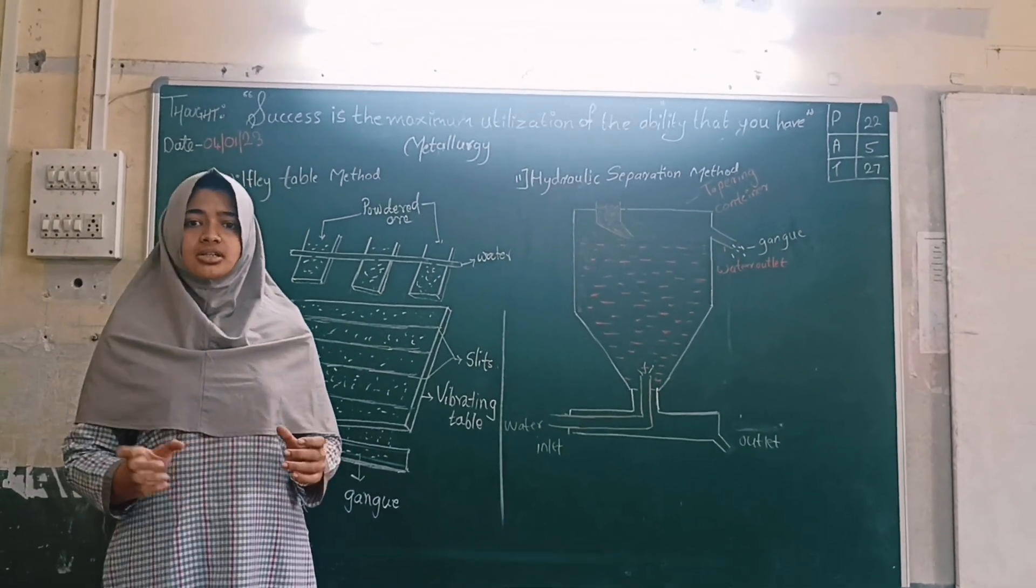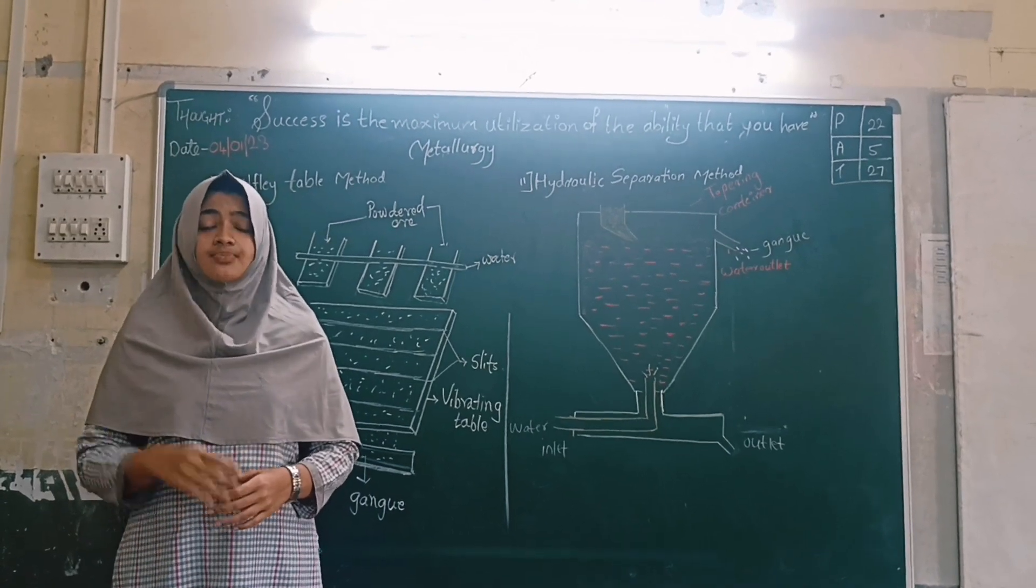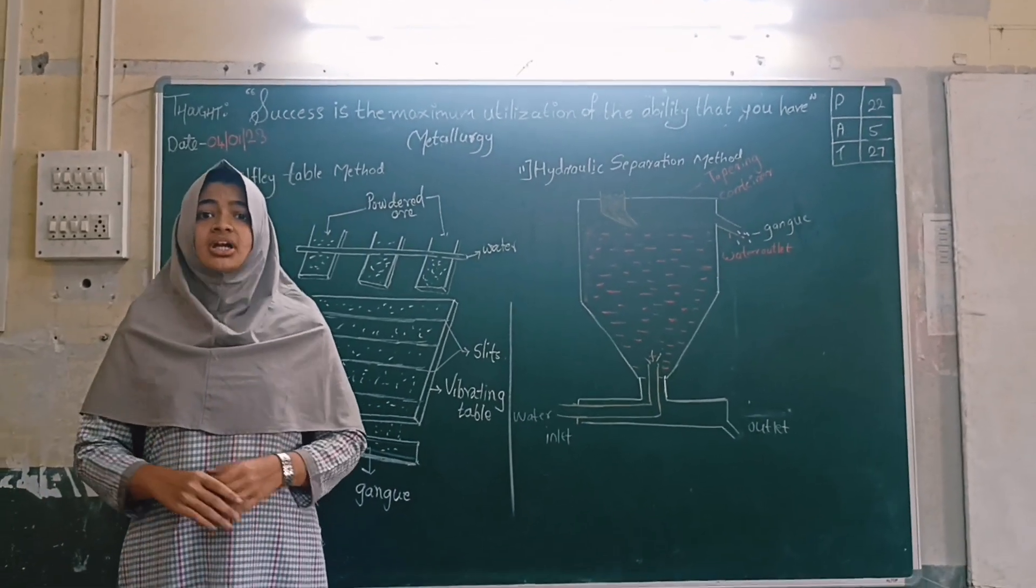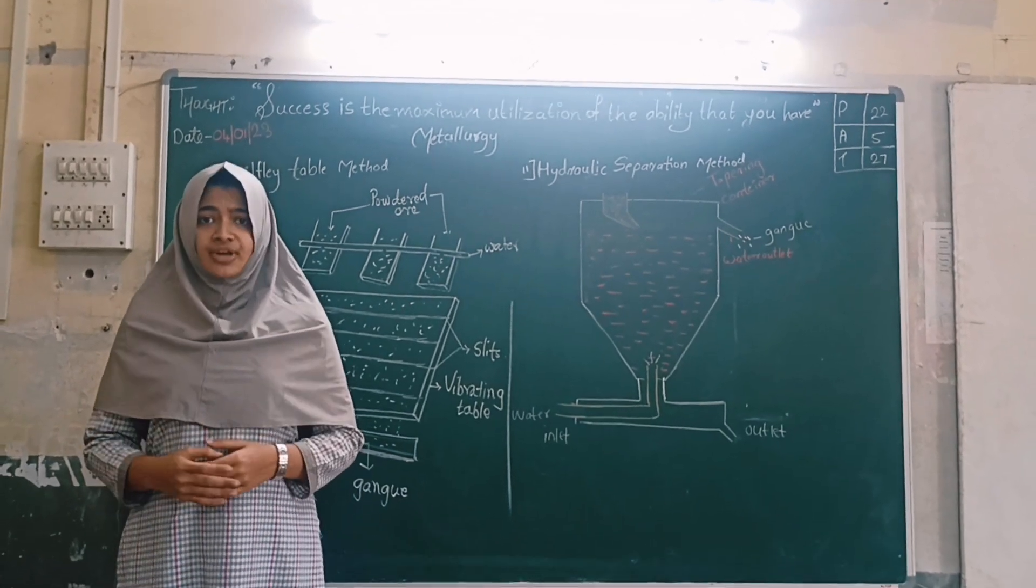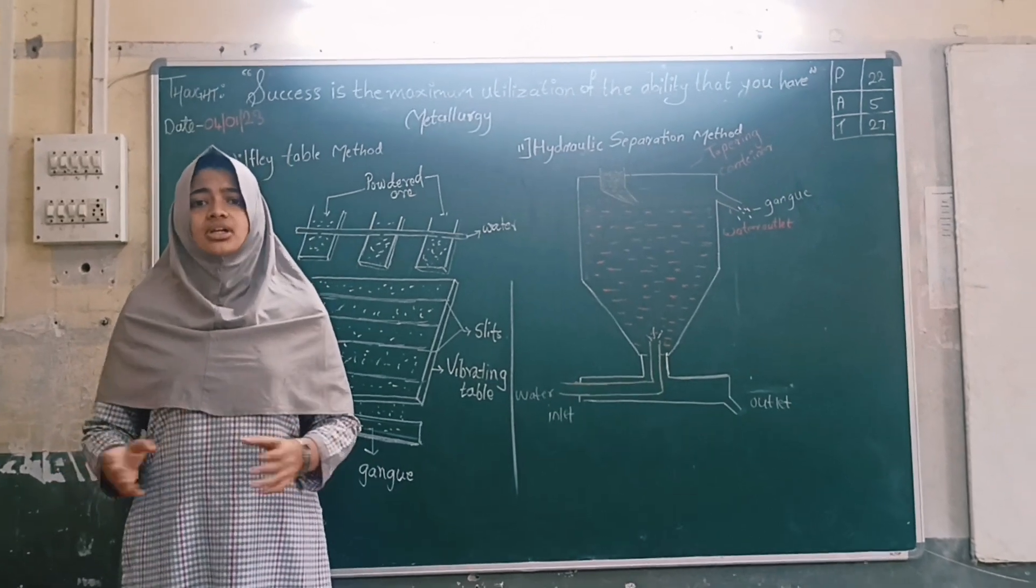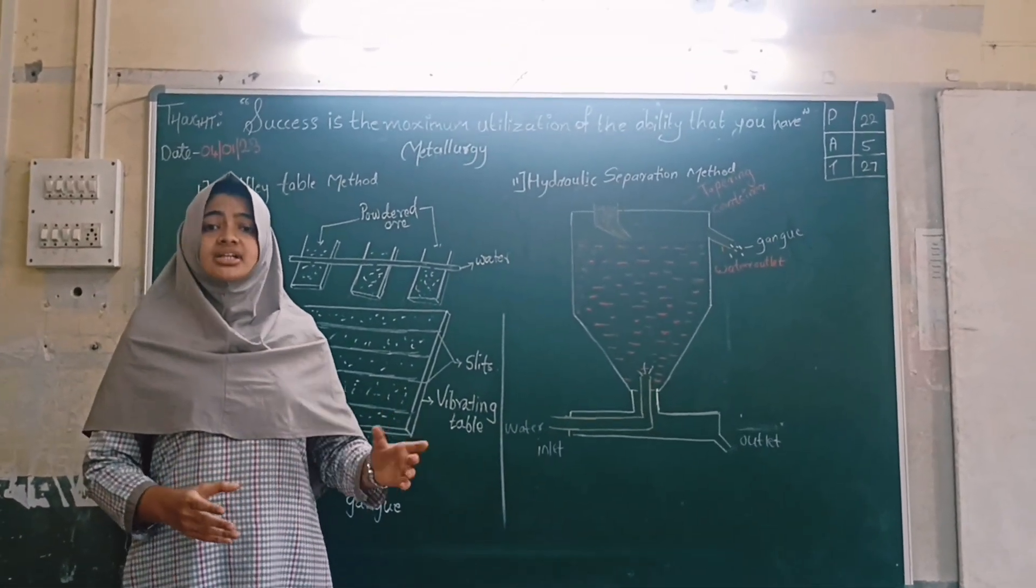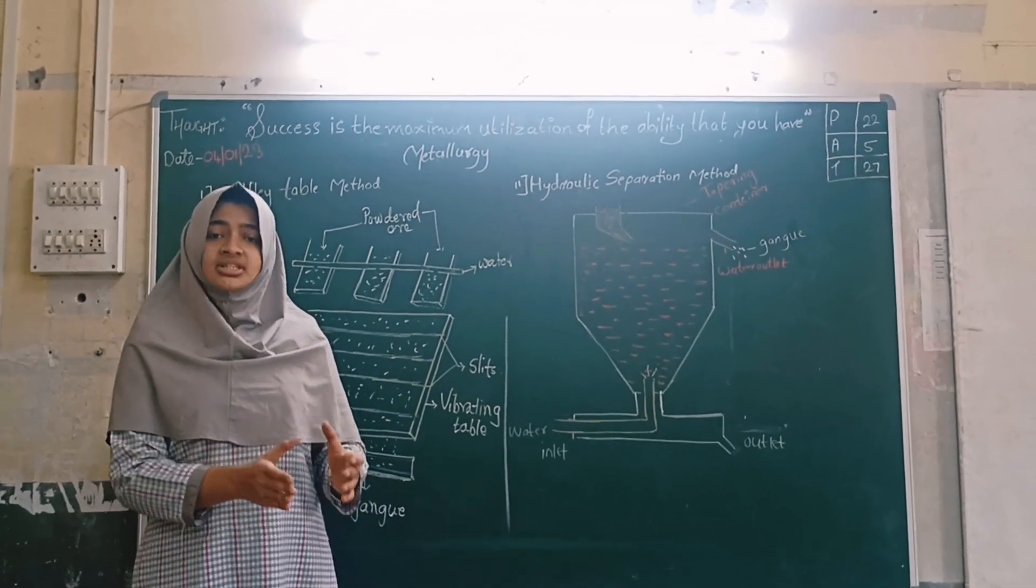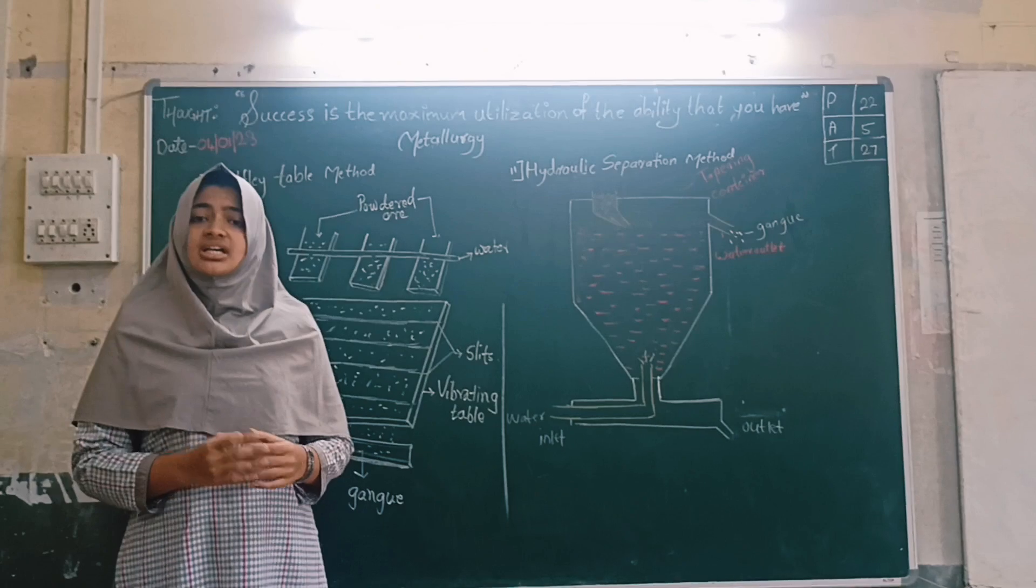Now how do we find metal in nature? We find metal in two states: free state and combined state. The metals which do not react with air, water or other natural factors are in free state, such as gold. It is found in nature in pure form. But some metals are found in combined state, meaning the metals can react with air, water and other natural factors, such as iron.